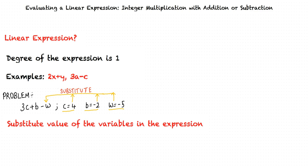Yes. We know that c equals 4, b equals negative 2, and w equals negative 5. Substituting these values in the expression, we get 3c plus b minus w equals 3 times 4 plus negative 2 minus negative 5, which equals 15.